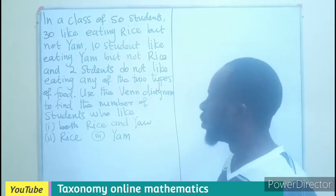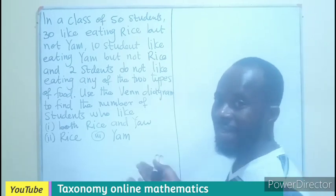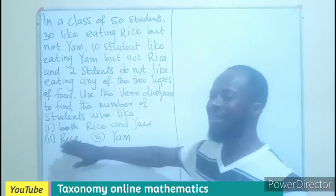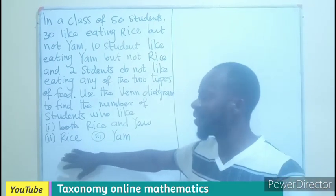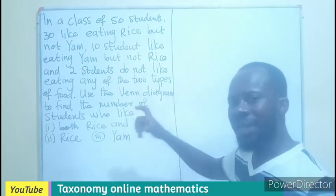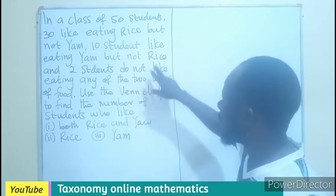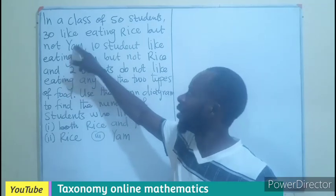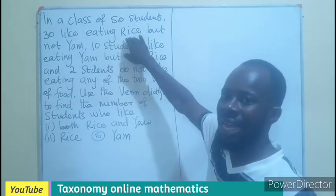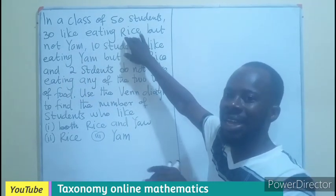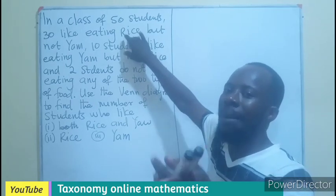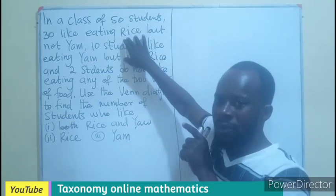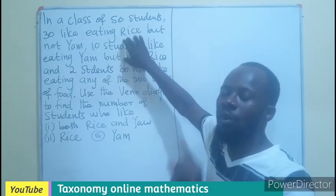We are using a Venn diagram to illustrate in order to find the number of students who like both yam and rice. Those who like rice as a main set and that of yam as a main set. Now, this statement here, rice but not yam, meaning those who are in the category of rice has nothing to do with yam. Meaning, there is no intersection.